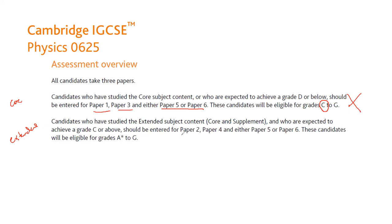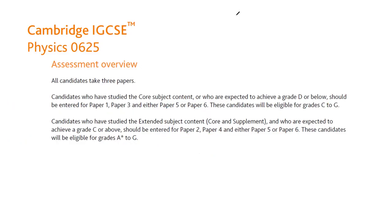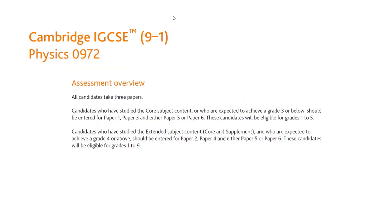That's why you will not select core — we'll select the extended one, in which the combination is Paper 2, Paper 4, and either Paper 5 or 6. We'll select Paper 6. So you will select the combination 2, 4, and 6, and candidates are eligible for grades from A* to G.